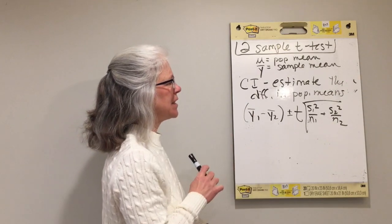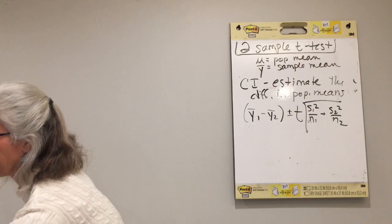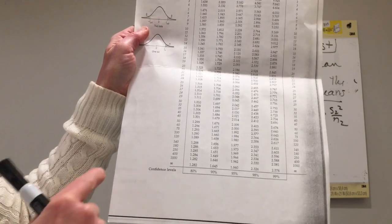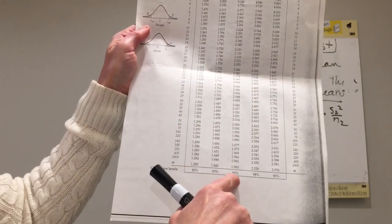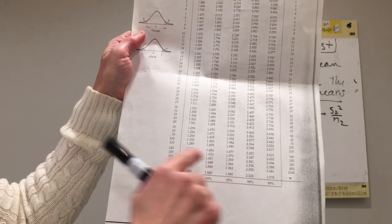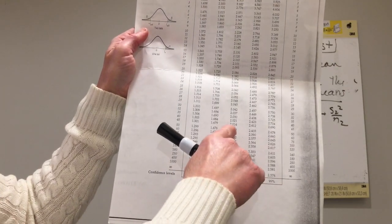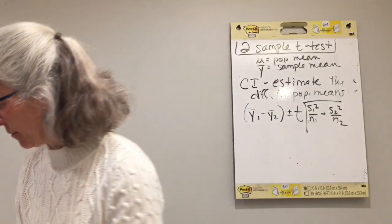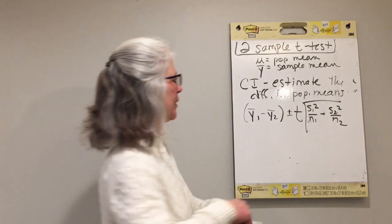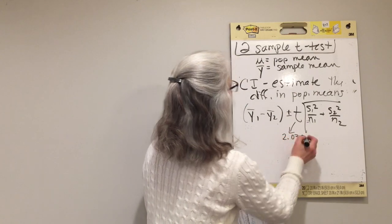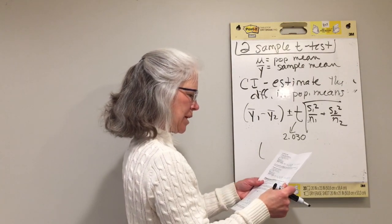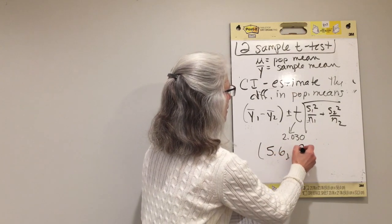The one thing we still need is our t-statistic from table T. To find it for a confidence interval, we find our degrees of freedom — 36.2, drop down to 35 — and our level of confidence, 95%. Bringing those together gives us t* = 2.03. We plug everything in — sample means, sample standard deviations, sample sizes, and 2.03 — and we get a confidence interval of 5.6 to 19.8.